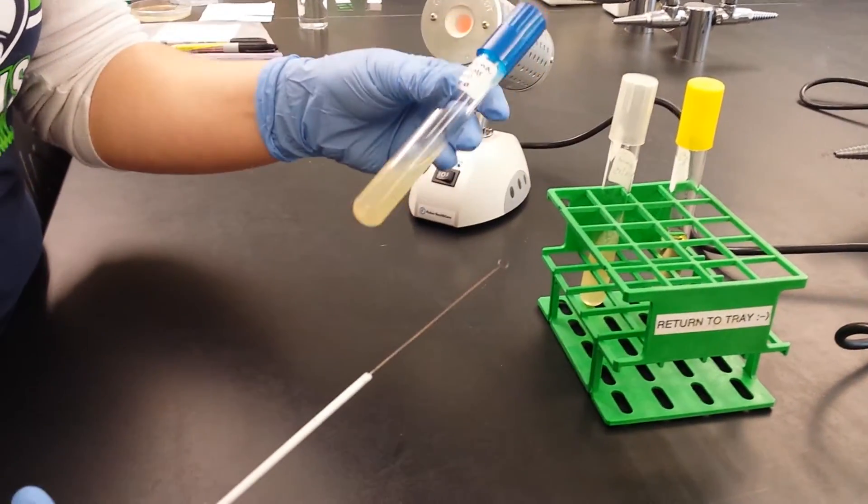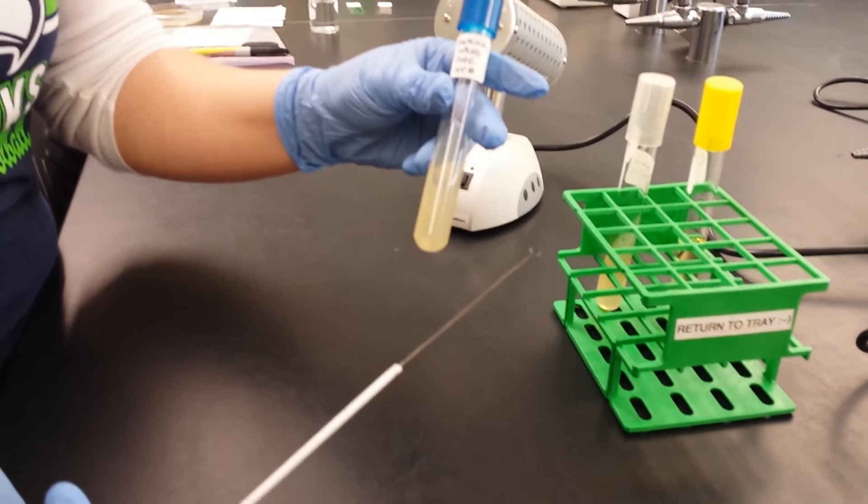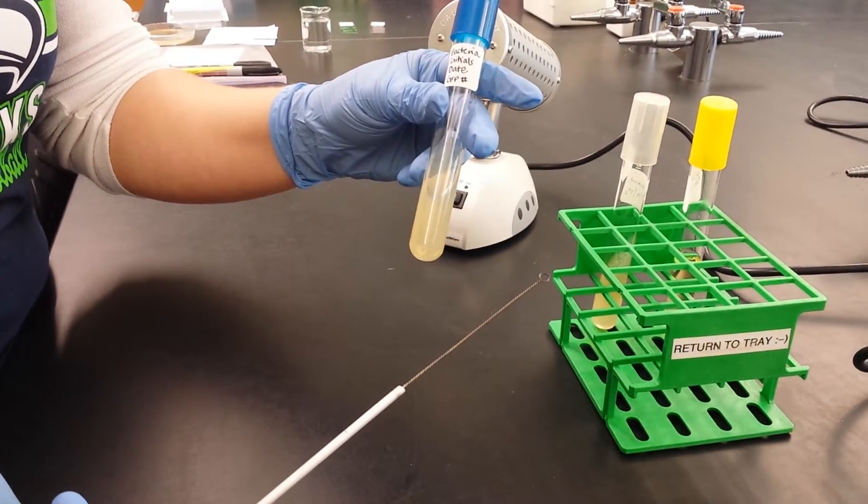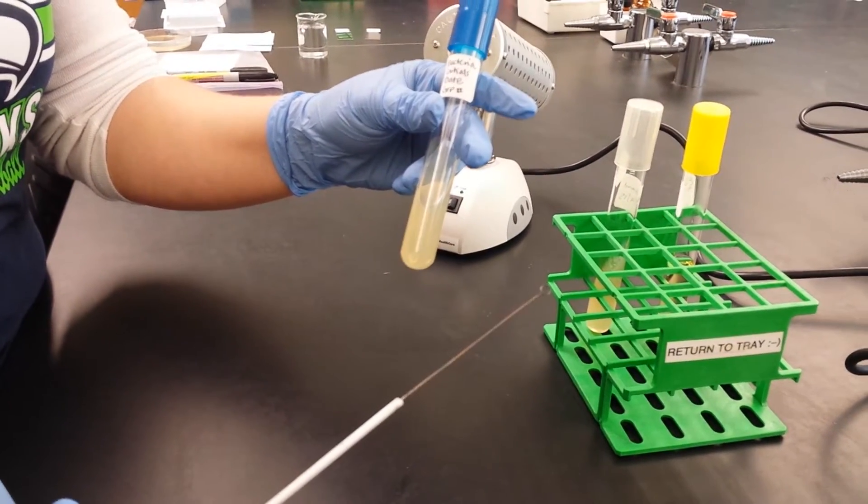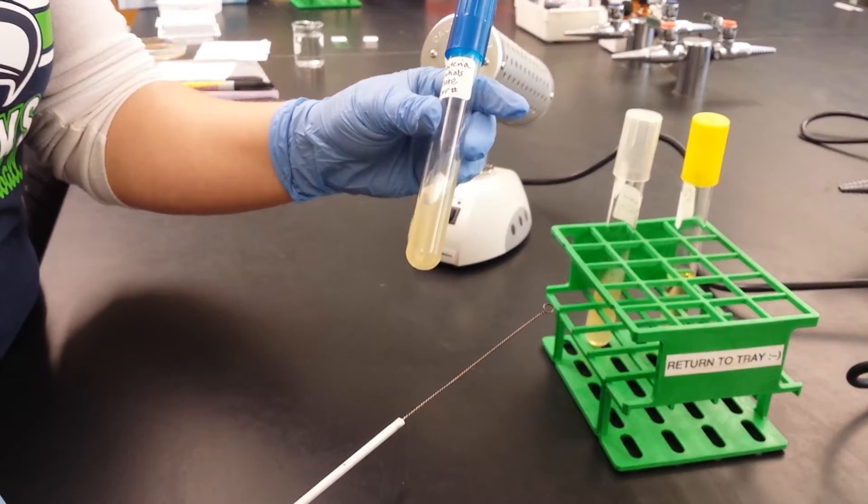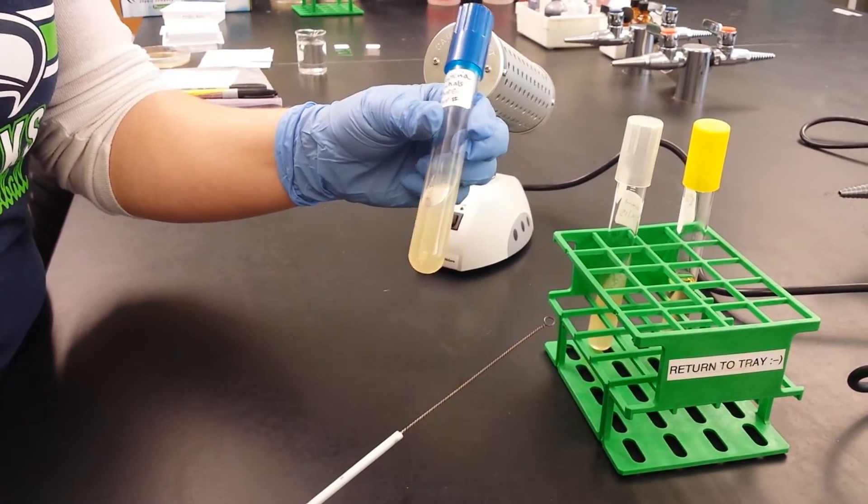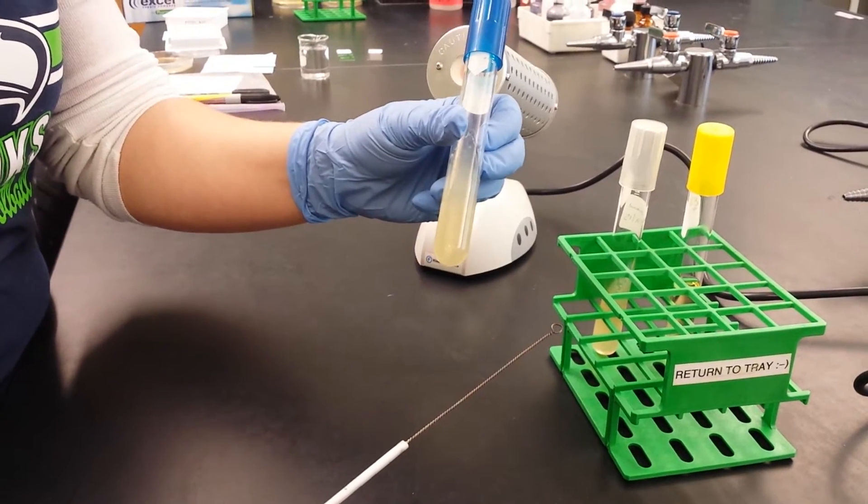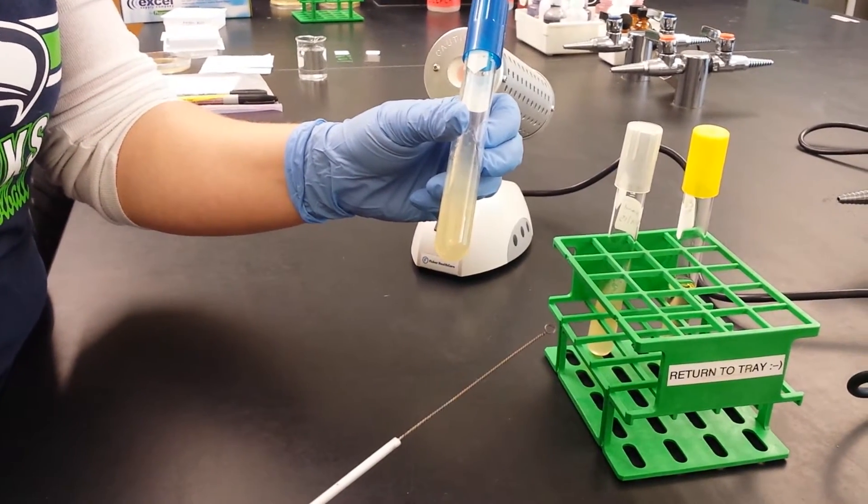Then I pick up my sterile media. And notice I've already put my label on there. I like to do that ahead of time so that I can be quick when I work. And notice also that the label is at the top part of the slant, rather than back here. If I had the label back here, I couldn't see my bacteria growth.